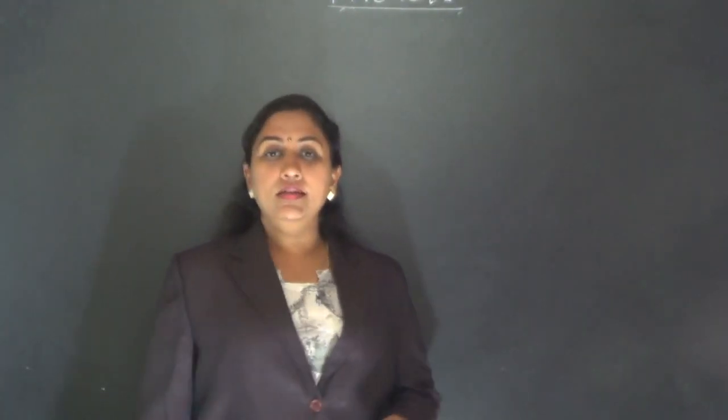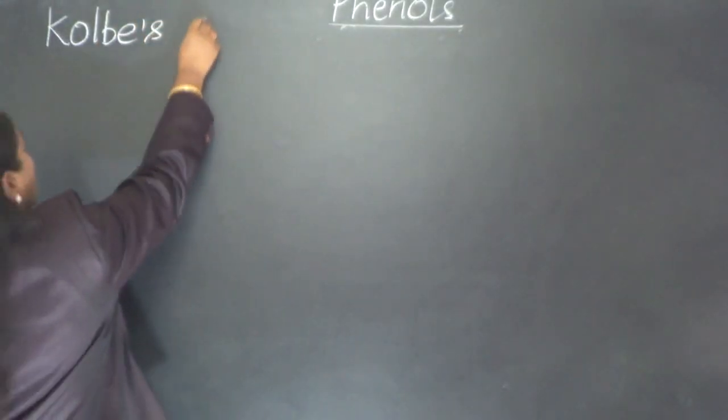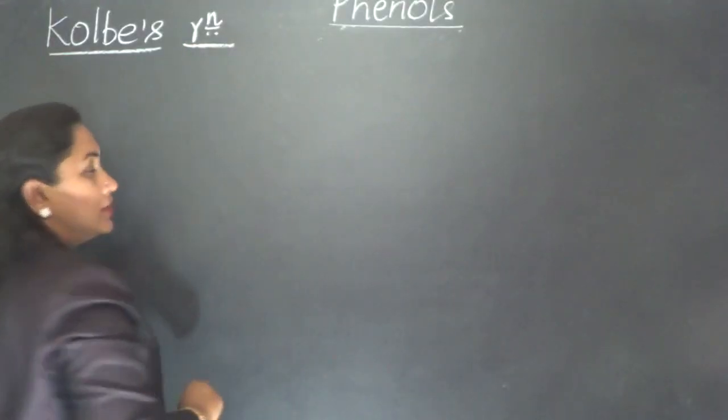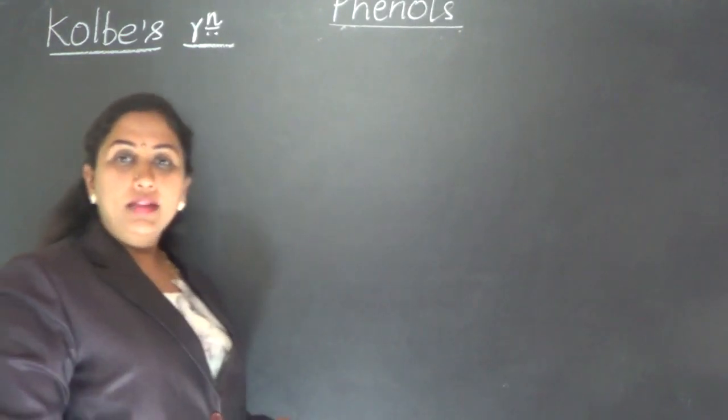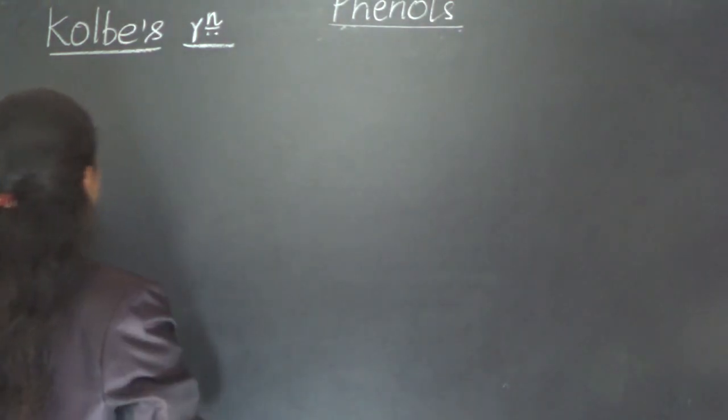In this video lesson, let us learn about Kolbe's reaction of phenol. Kolbe's reaction of phenol will yield us salicylic acid. This is another method of obtaining salicylic acid starting from phenol.